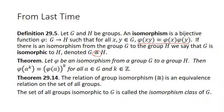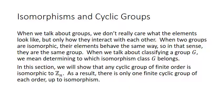Now let's talk about isomorphisms and cyclic groups. When we talk about groups, we don't really care what the elements look like — we only care how they interact with each other. So when two groups are isomorphic, their elements behave the same way; in that sense, two isomorphic groups are the same group. Classifying a group G means determining which isomorphism class G belongs to. In this section we will show that any cyclic group of finite order is isomorphic to Zn, and as a result there is only one finite cyclic group of each order, up to isomorphism — meaning isomorphic groups are considered the same group.